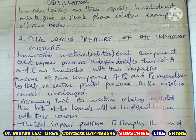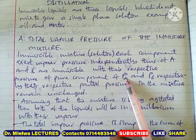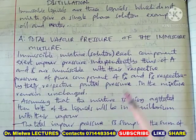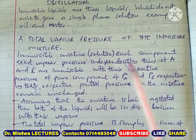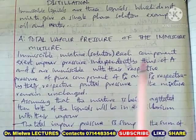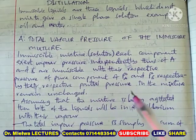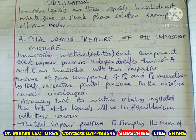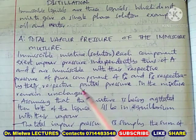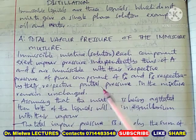So if we have A and B, the pure vapor pressure of A is P-naught of A and the pure vapor pressure of B is P-naught of B. In the mixture their vapor pressures would not change, because there is no interaction between them — every liquid exists as it is, they do not mix. I explained this with several examples in the previous session.